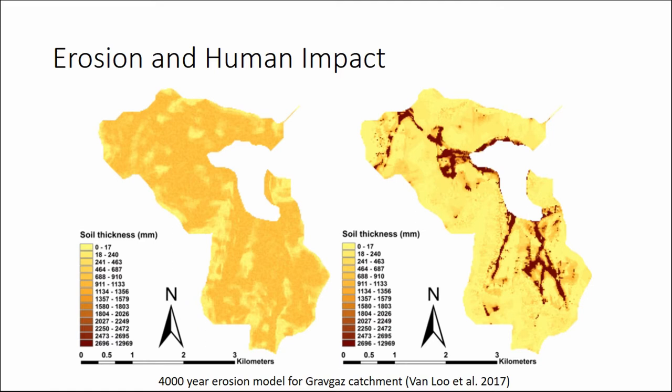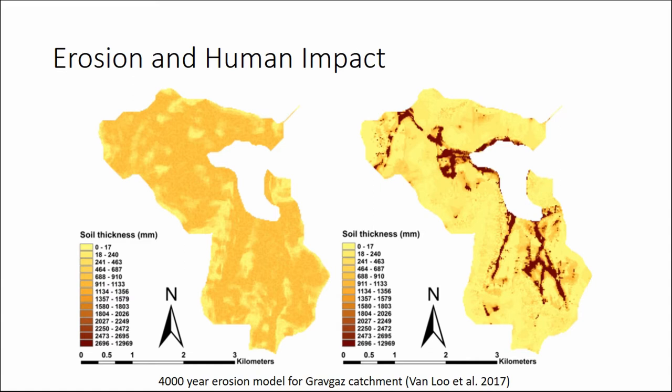Grappling with these gaps in the record inspired us to take a different approach — finding a way to target specific periods and types of sites to fulfill our research goals. The approach we decided to use, designed by my co-author Chris Carlton et al., is known as LAMAP. The theory behind LAMAP is that humans make land-use decisions by referencing mental archetypes which come from practice, tradition, and social memory.